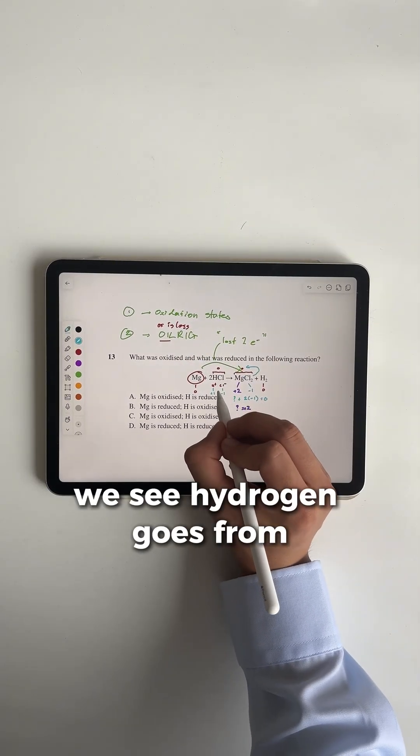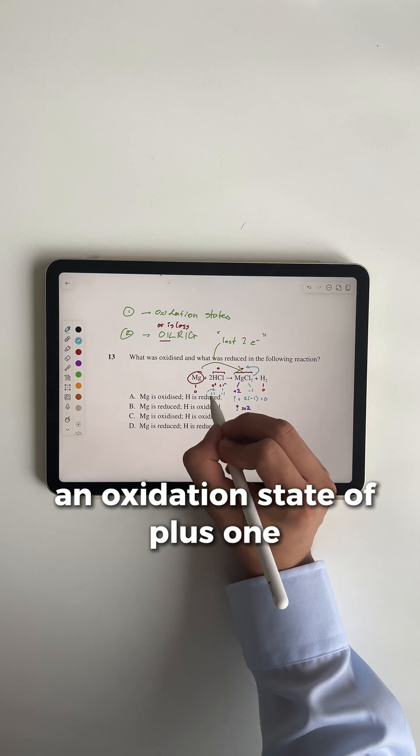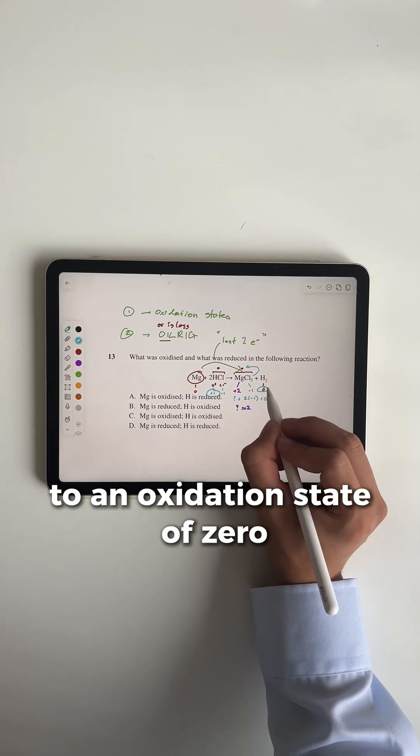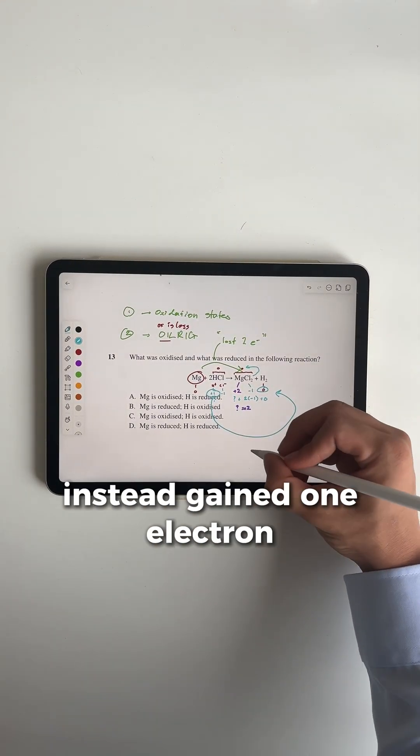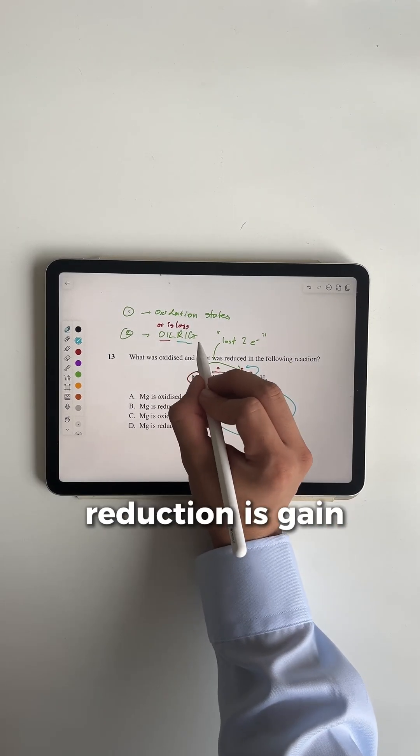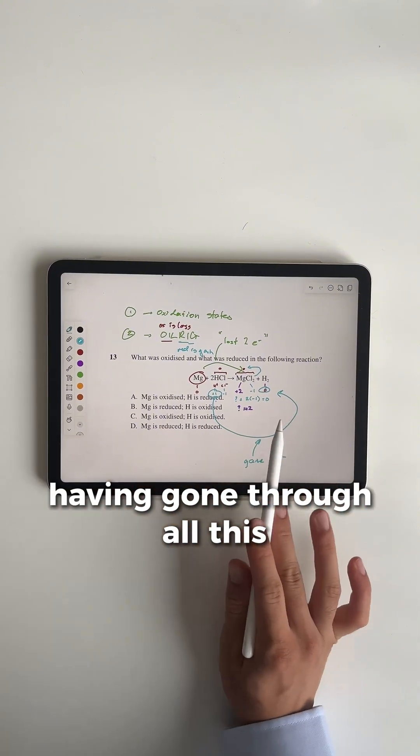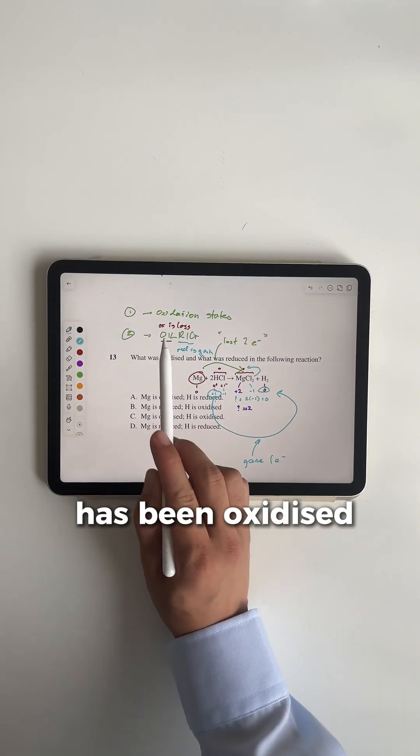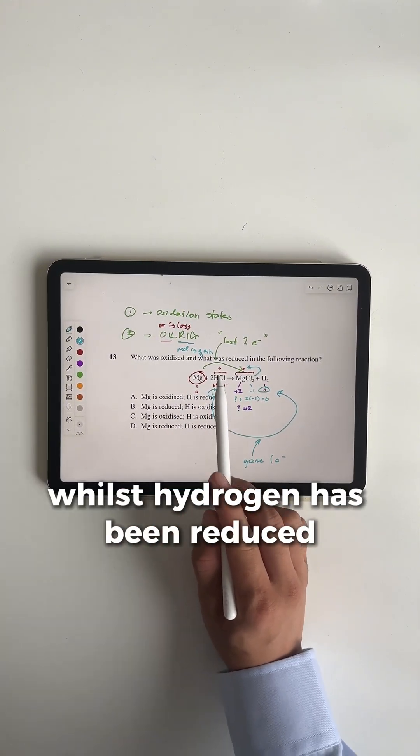On the other hand, we see hydrogen goes from an oxidation state of +1 to an oxidation state of zero. In other words, hydrogen must have gained one electron, and as we know, reduction is gain. Having gone through all of this, we now know magnesium has been oxidized, whilst hydrogen has been reduced.